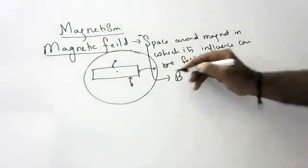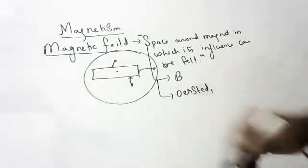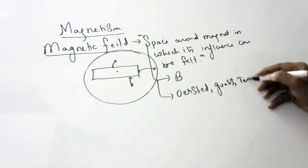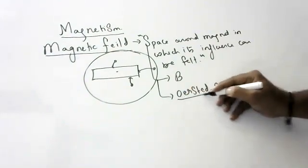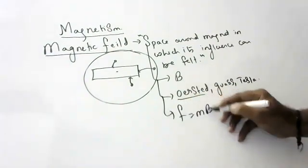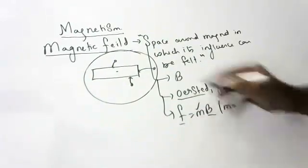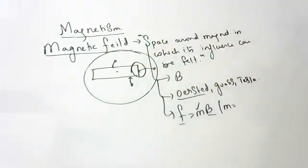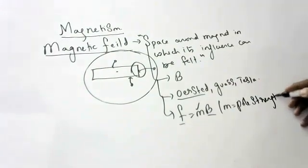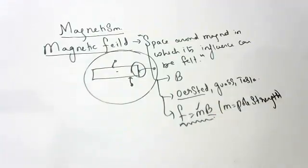Magnetic field is denoted by B, and its units are oersted. In 10th class and intermediate you will study so many other units like Gauss and Tesla. But in 10th class the formula is F = MB, where F is the force, B is the magnetic field, and M is the pole strength. The strength of each magnetic pole is called pole strength. This formula is just for your reference; it is not required for 10th class.